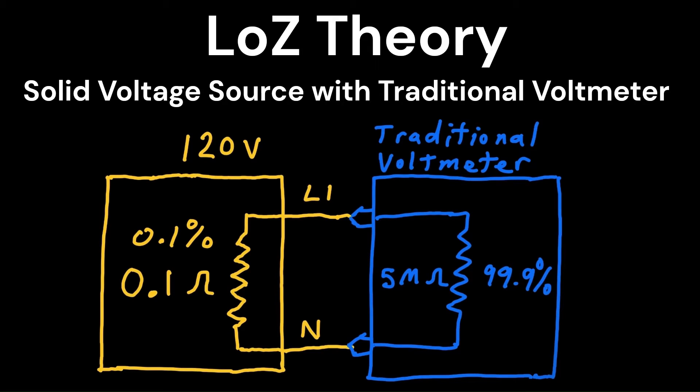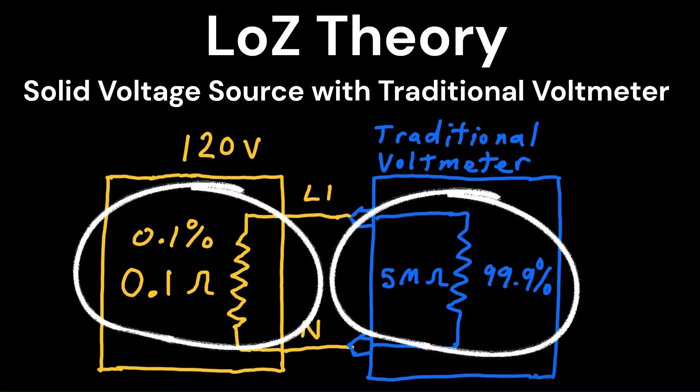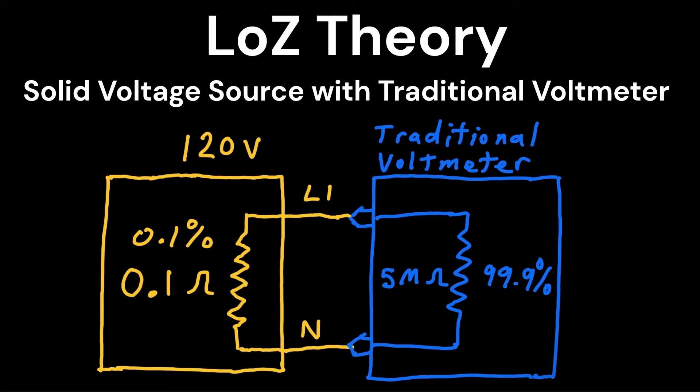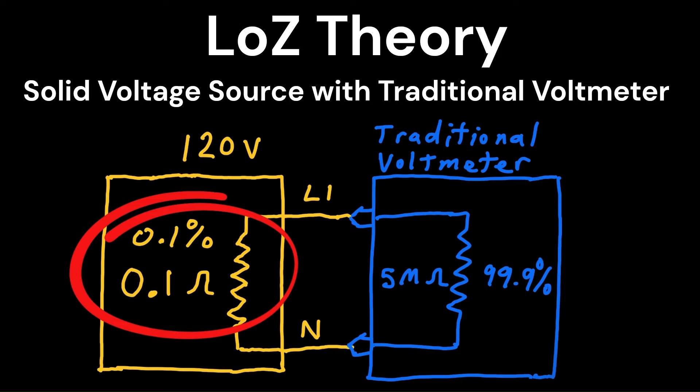So a little about low Z theory. Whenever you read something with your meter, you create a series circuit of two loads where the original voltage source is roughly split up among the two loads. The highest resistance gets the most voltage whereas the remaining resistance gets the difference.